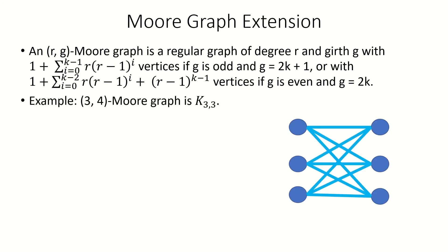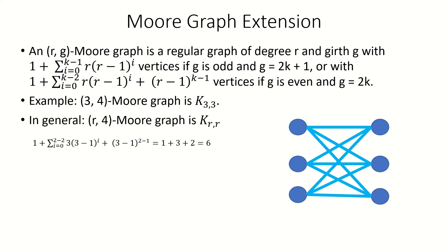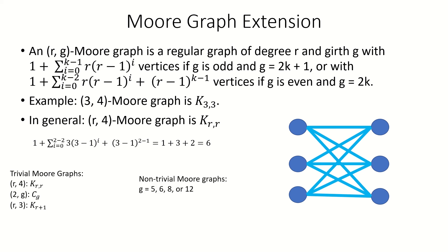We can now define the Moore graph with even girth 2k and degree r to be any graph with even girth 2k and degree r that has the exact number of vertices given by our Moore bound. Using our new definition, the Moore graph with degree 3 and girth 4 is the complete bipartite graph K_{3,3}, as it has the number of vertices given by our lower bound for graphs with even girth 4 and degree 3. In general, the Moore graph with degree r and girth 4 is the complete bipartite graph K_{r,r}. It has also been shown that besides the trivial Moore graphs, the only Moore graphs are those for girth 5, 6, 8, or 12. Here are a couple of the Moore graphs for higher even girth: 6 and 8.